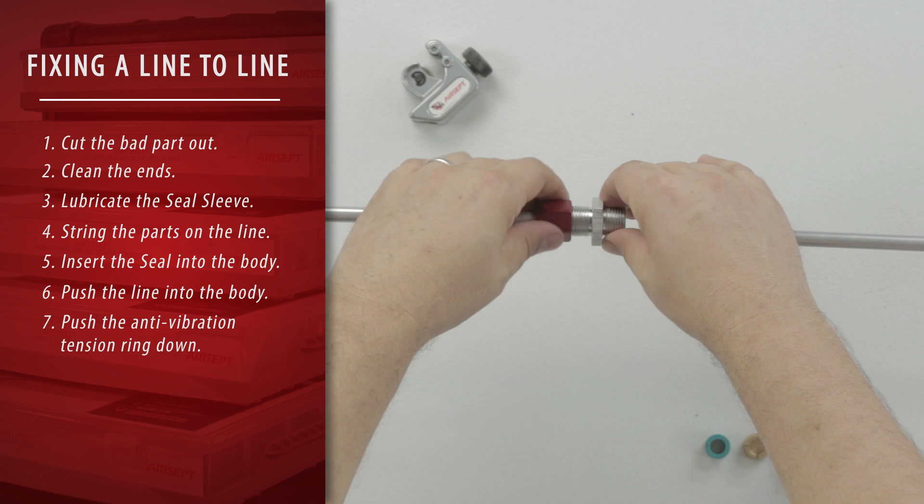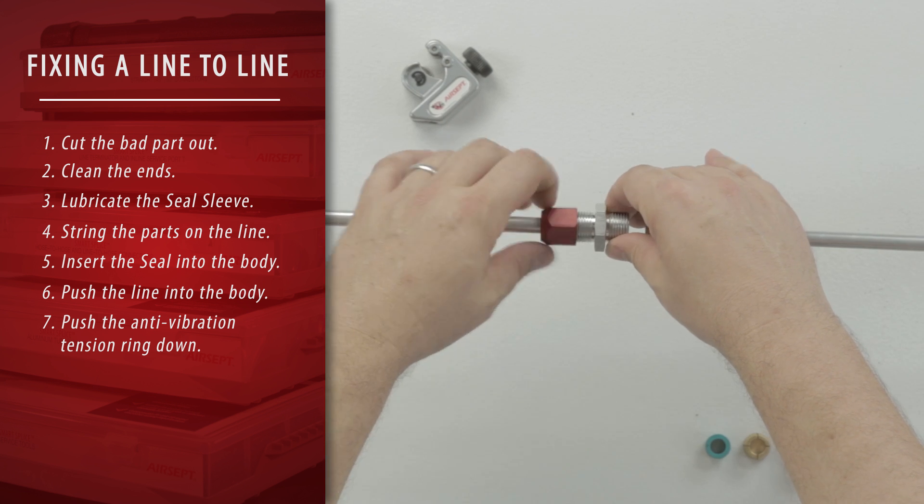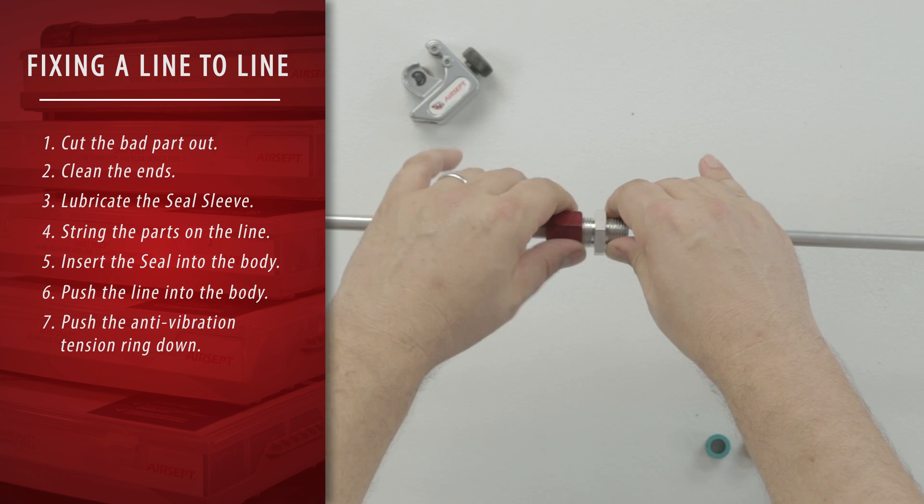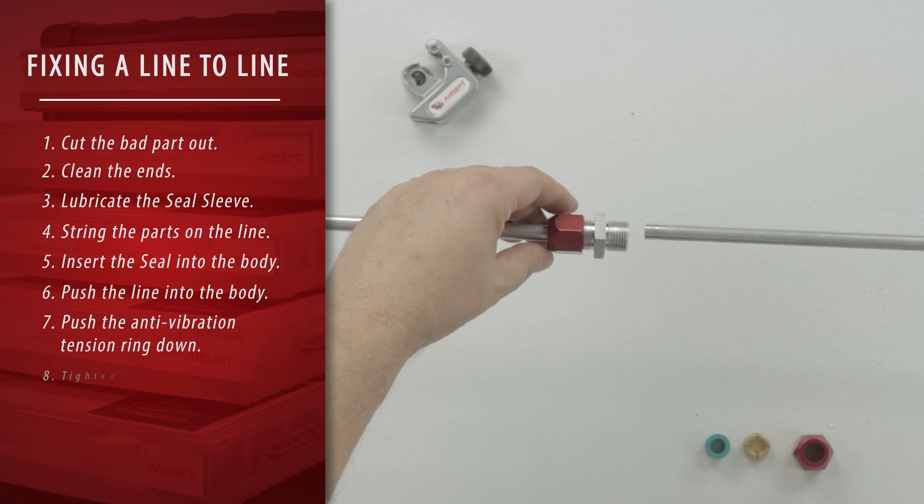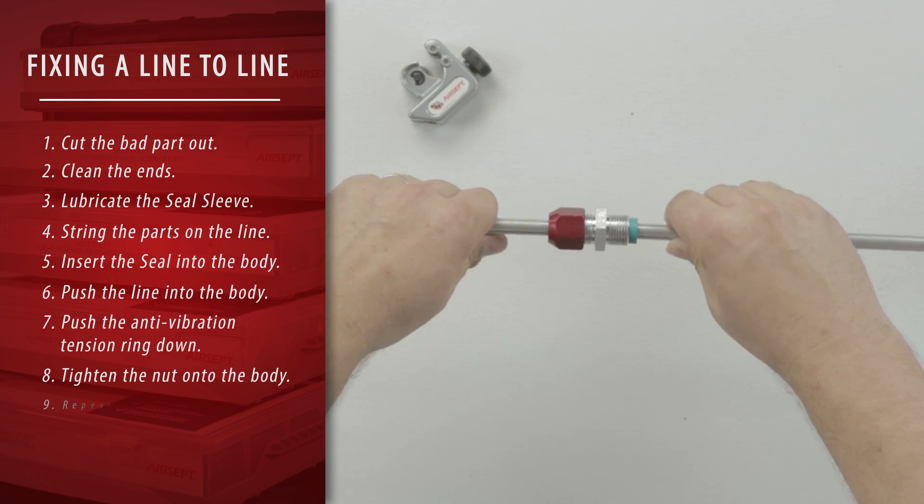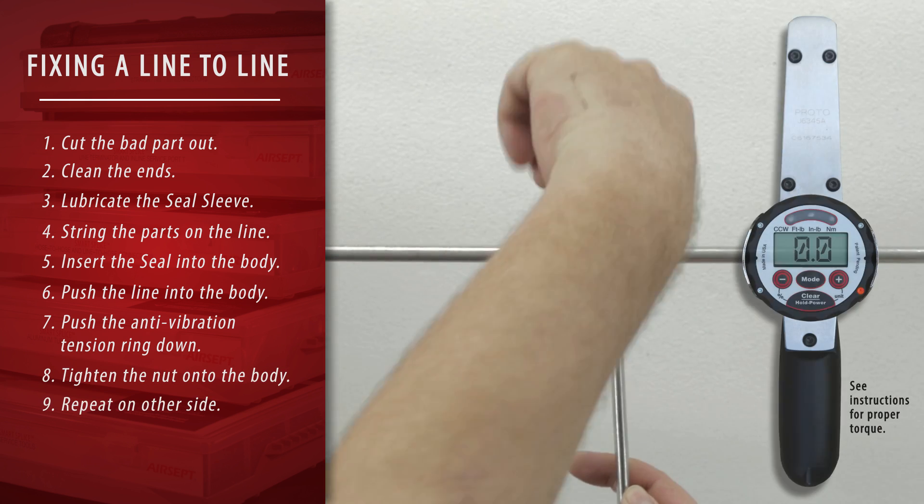Push the metal AVTR down. It's important to make sure the line is properly seated in the line spliced body. Tighten the nut onto the body and do the same thing on the other side and you're done.